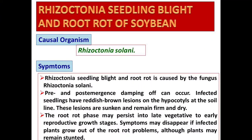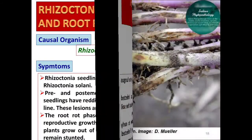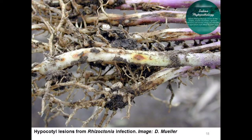Rhizoctonia seedling blight and root rot of soybean is a common disease occurring in all types of bean crops. Its causal organism is Rhizoctonia solani. In the images you can see heavy rotting of roots and all seedlings dying due to infection by this Rhizoctonia blight.